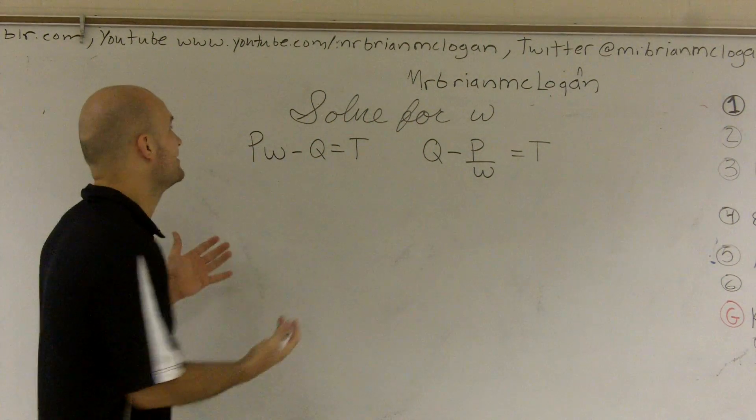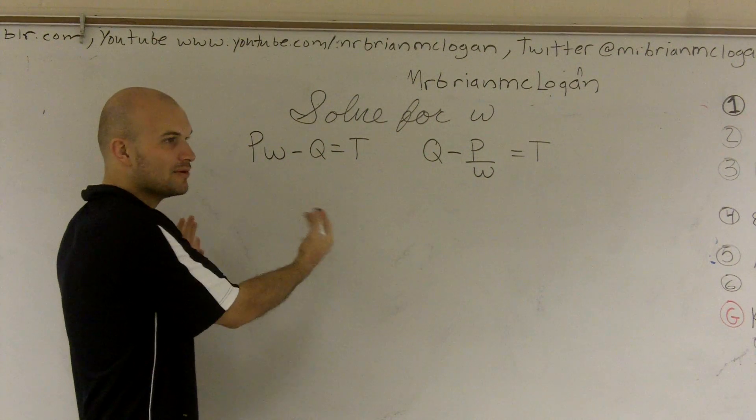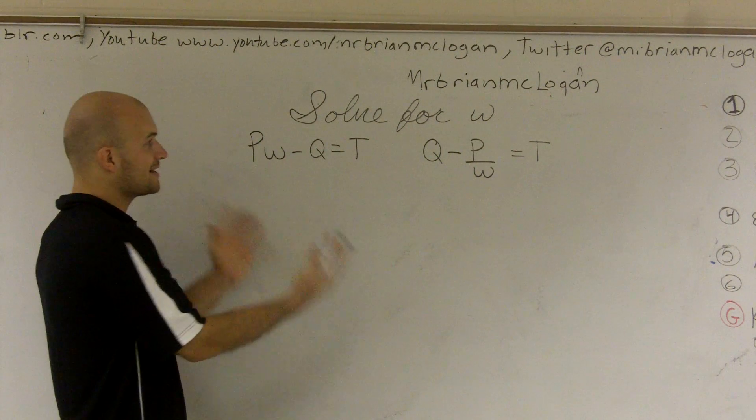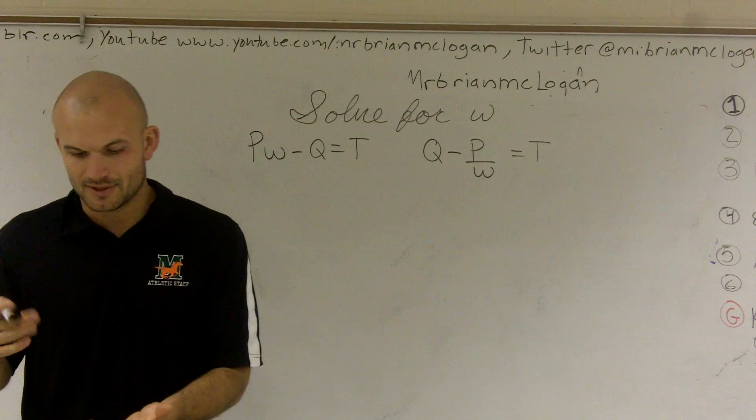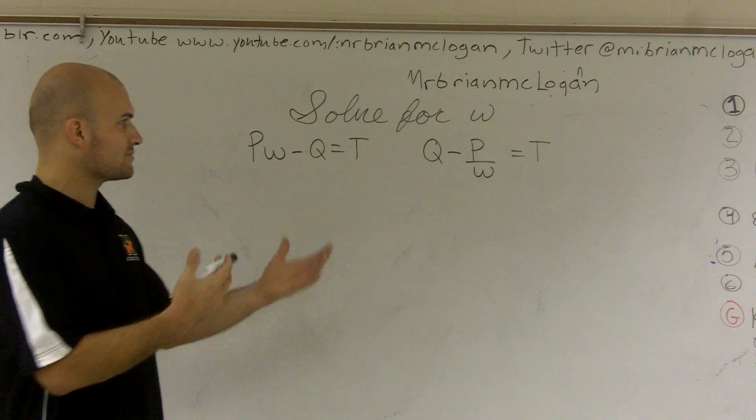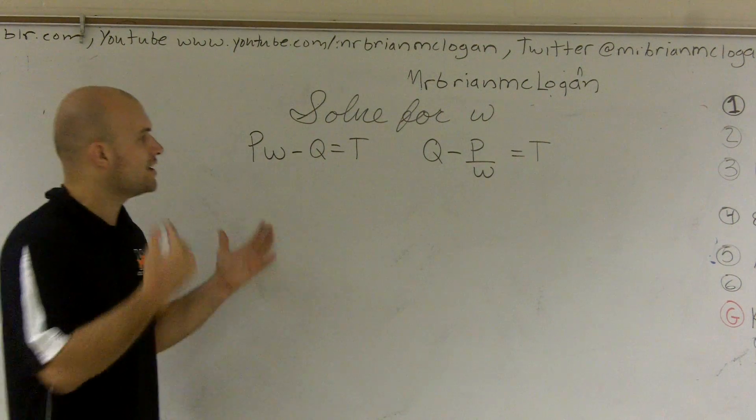And the reason why it's so confusing is it's just a lot of mumbo jumbo up there. And we don't really know what exactly we'll solve for. We're not going to find a value. Usually when you're solving equations, it's like x equals 4 or x equals 5. It's easy to understand.